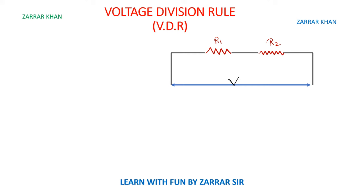If I need to calculate V1, which is the voltage across R1, and I need to calculate V2, which is the voltage across R2 — what is the formula for calculation of such voltages? So if I have this total voltage as V, I need to calculate V1 and V2.